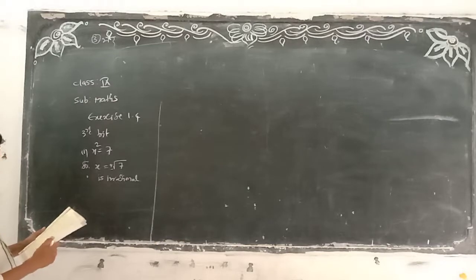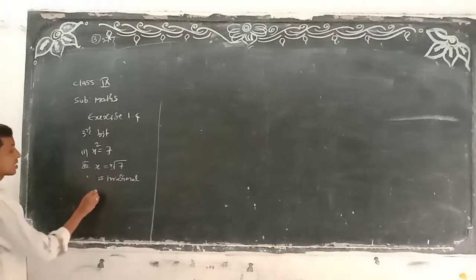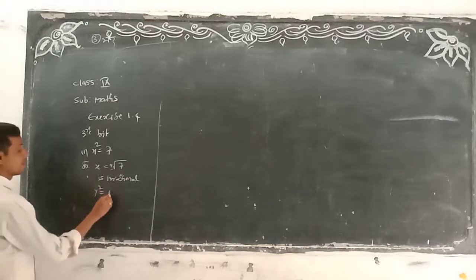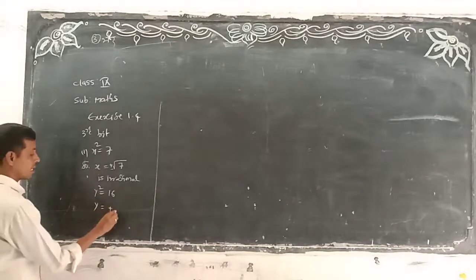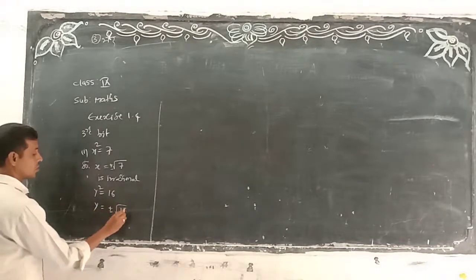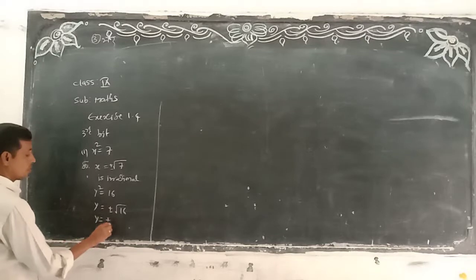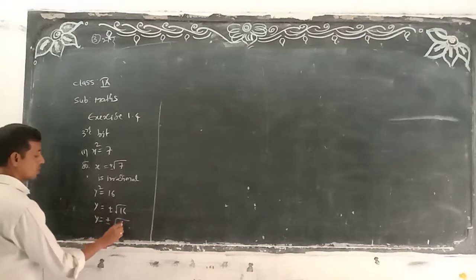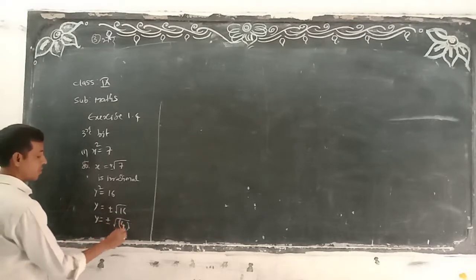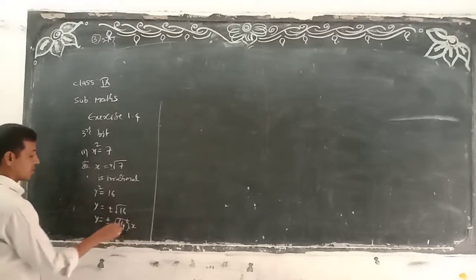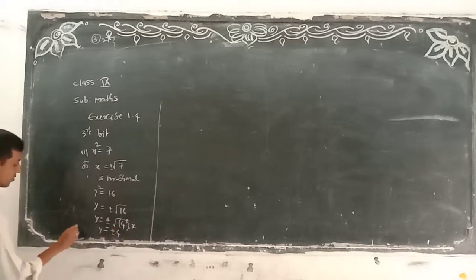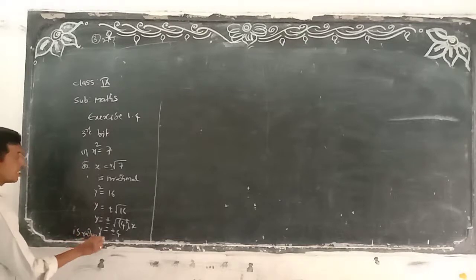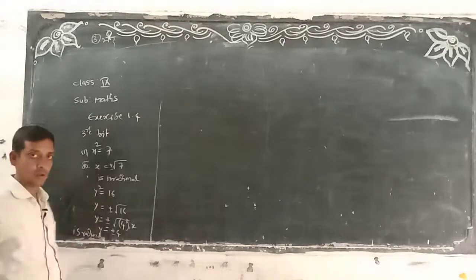Next, y squared is equal to 16. Same process: y is equal to plus or minus root 16. We can write root 16 as 4 squared, so the square root gets cancelled. y is equal to plus or minus 4. And 4 is a rational number.